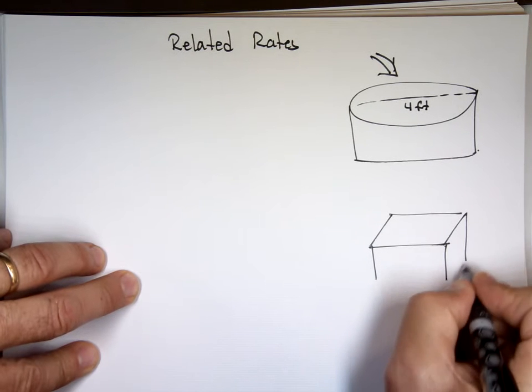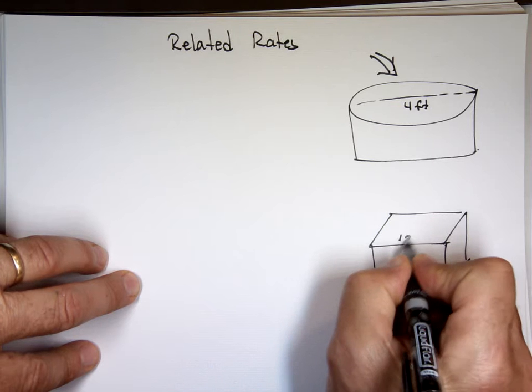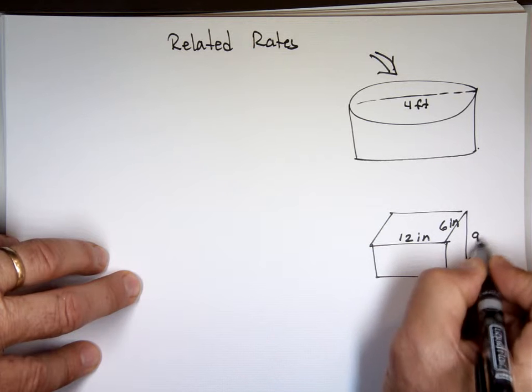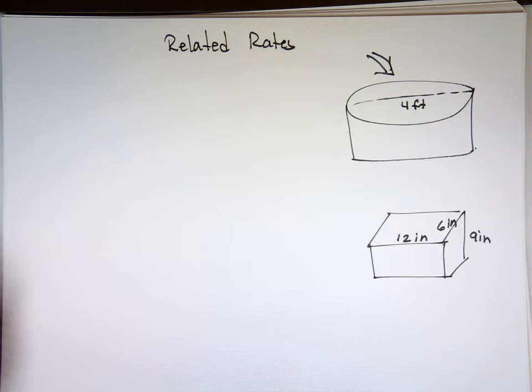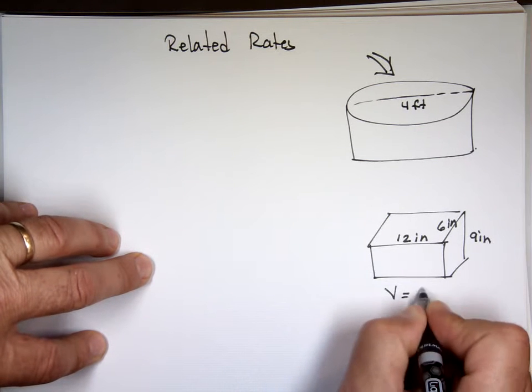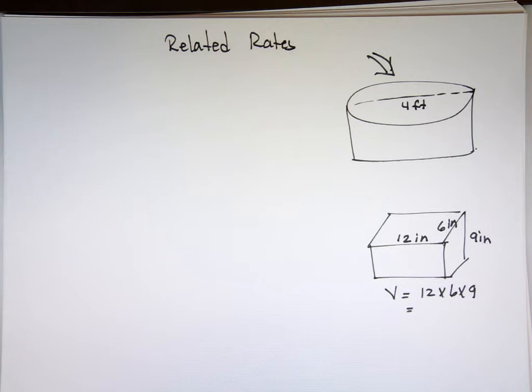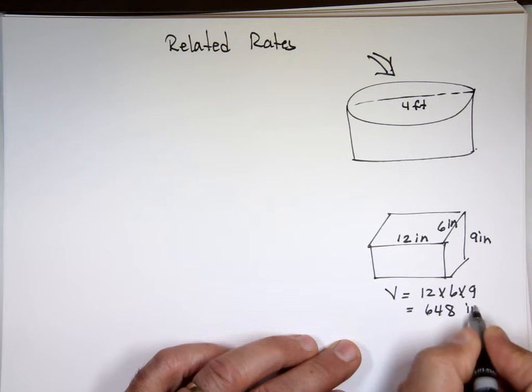We have a trash can we're gonna fill it with water and dump, not trash can, one of those baskets. We'll say what? 12 inches by 6 inches by 9 inches. We're gonna fill them. Every minute dump one of these into that. So the volume of this shape is 12 times 6 times 9.